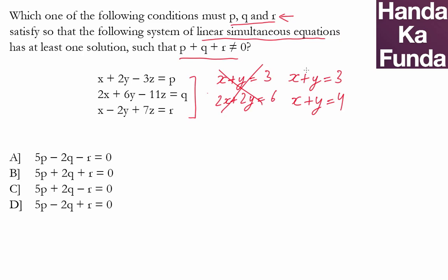So essentially what you need to do is check if something like that is happening here. And how do you check that? The simplest way to check is that in all these relationships you need to get the left hand side equal to the right hand side.